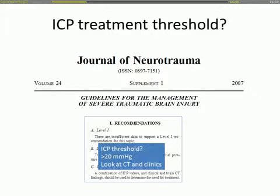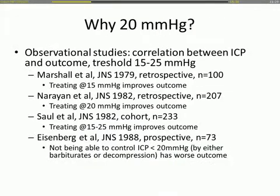We come now to the threshold of ICP. You can split the debate into two parts: the threshold where ICP is associated with worse outcome, and the threshold where we start aggressive treatment — these are probably different things. The guidelines recommend treating or considering treatment above 20 mmHg, while also looking at other parameters. In all observational studies, there is a correlation between ICP and worse outcome somewhere between 15 and 25 mmHg.